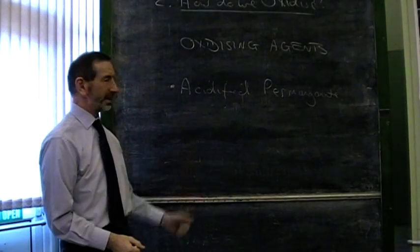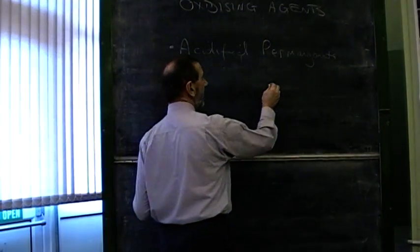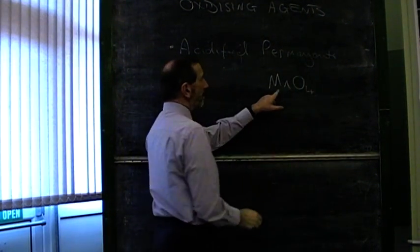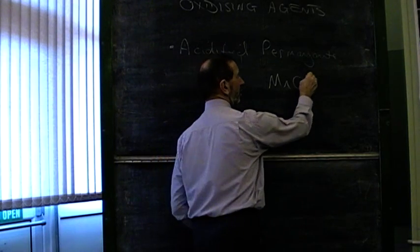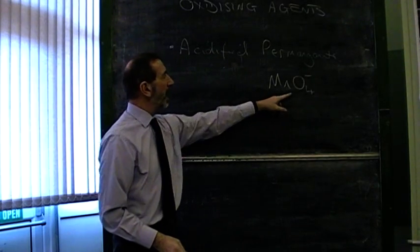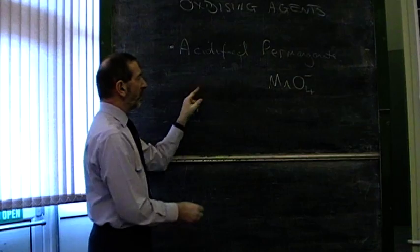are acidified permanganate. What is that? Well it's the permanganate ion. There it's there. Manganese and oxygen, one negative charge. Permanganate, which has been mixed with acid.